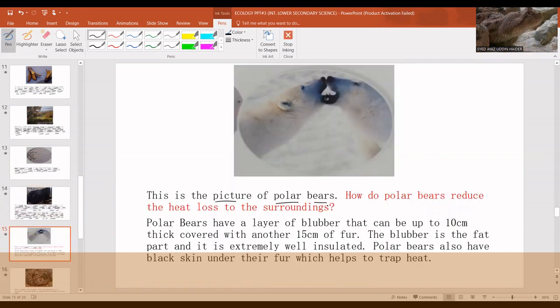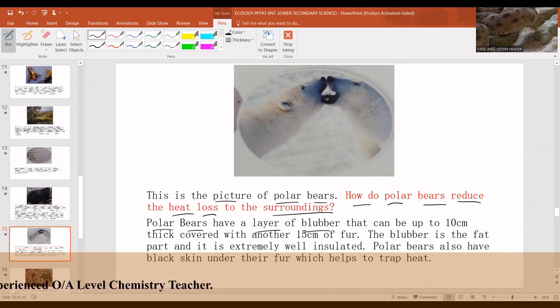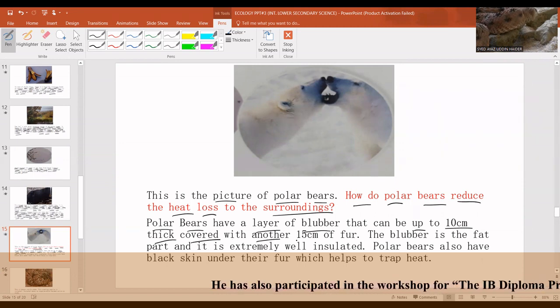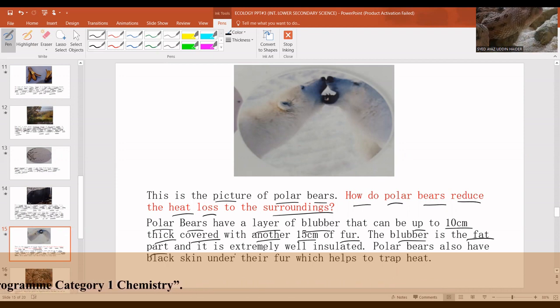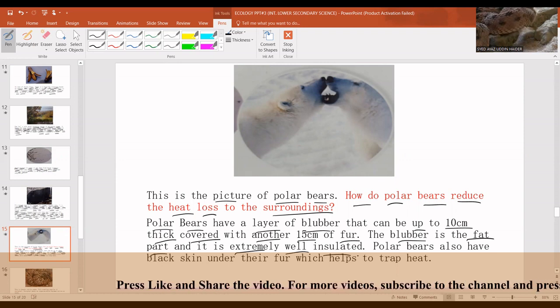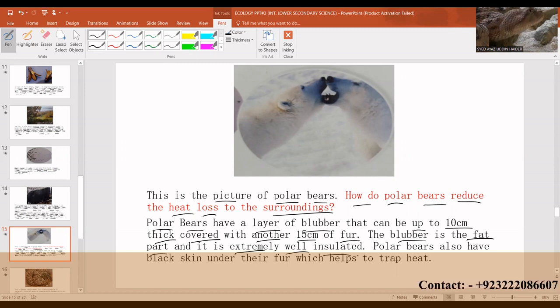This is the picture of polar bears. How do polar bears reduce the heat loss to the surroundings? Polar bears have a layer of blubber that can be up to 10 centimeters thick covered with another 15 centimeters of fur. The blubber is simply the fat part and it's extremely well insulated. Insulated means any material which does not allow the conduction of heat outside the surface. Polar bears also have black skin under their fur which helps to trap heat.